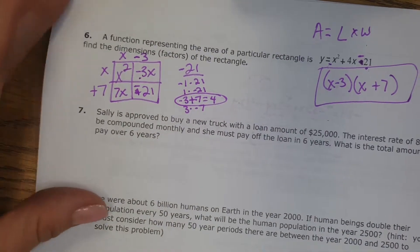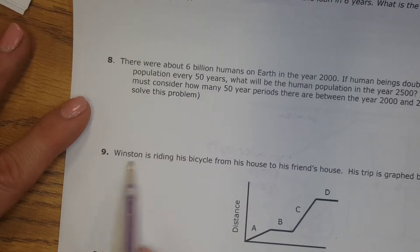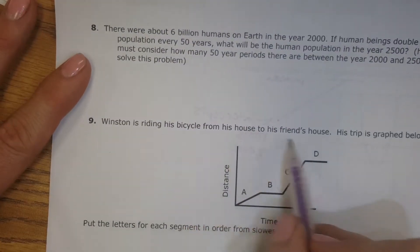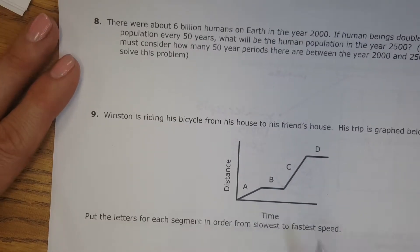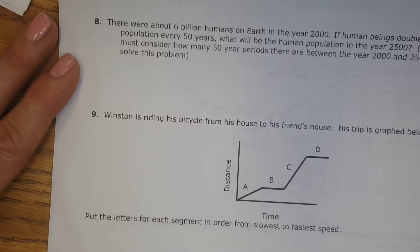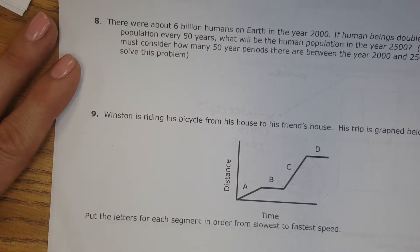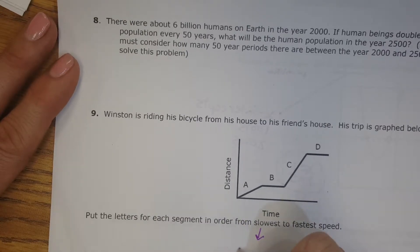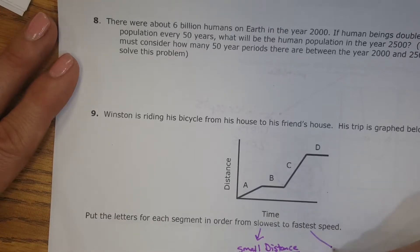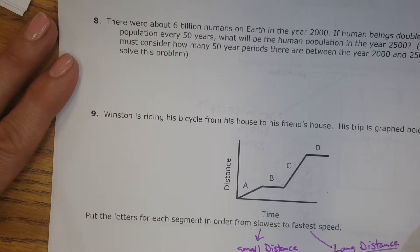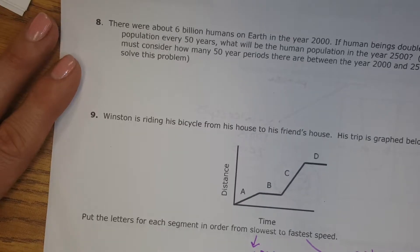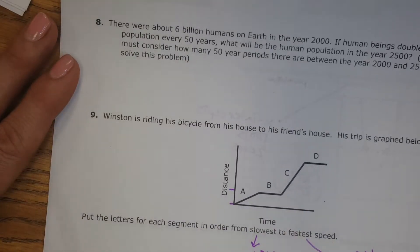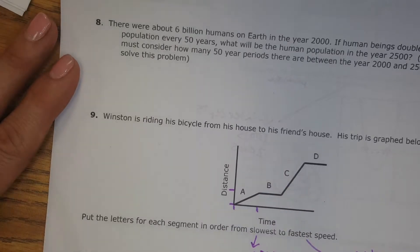Okay, we're skipping over 7 and 8. We've already done those. Number 9. Winston is riding his bicycle from his house to his friend's house. His trip is graphed below. It shows us the distance he travels over certain periods of time. Put the letters for each segment in order from slowest to fastest. So think about this. Slowest would be a small distance in a long amount of time. And fastest would be a long distance in a small amount of time.